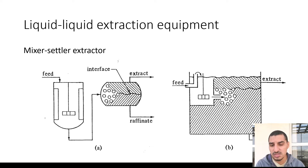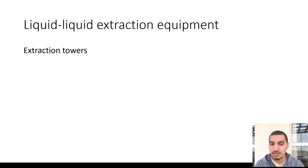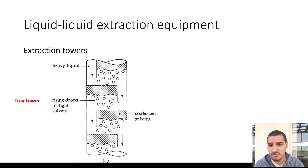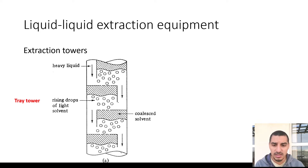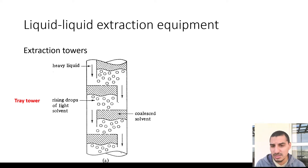For multi-stage separation, we can have something like a tray column, but in this case it's a tray column for liquid-liquid extraction. We have two liquids — one flowing from the top of the column to the bottom, and the second flowing from the bottom to the top. This raises an important point not discussed in distillation: how to route the fluids. In distillation we have a gas and a liquid, and it's intuitive that the gas is fed from the bottom. But here we have two liquids with comparable densities.